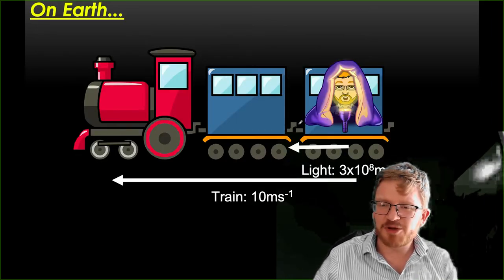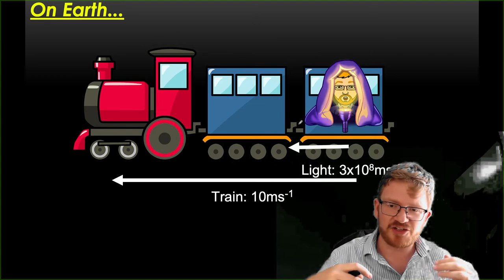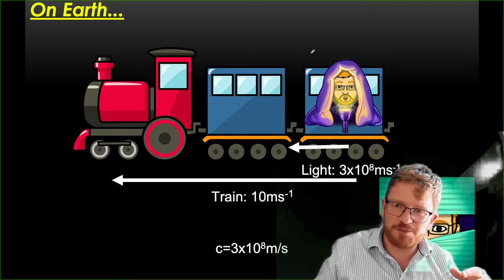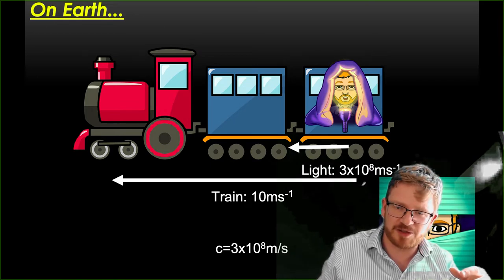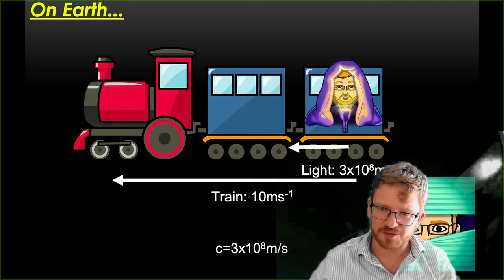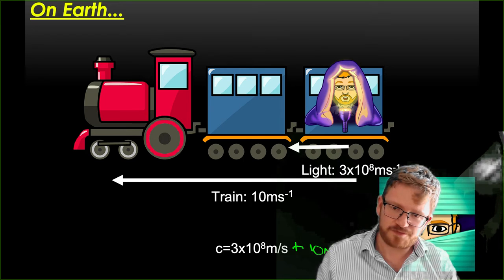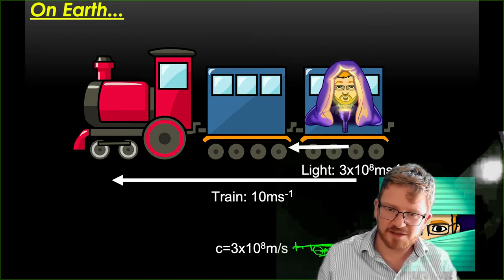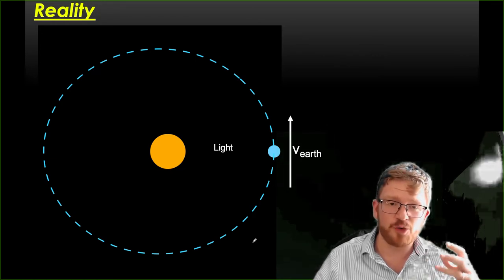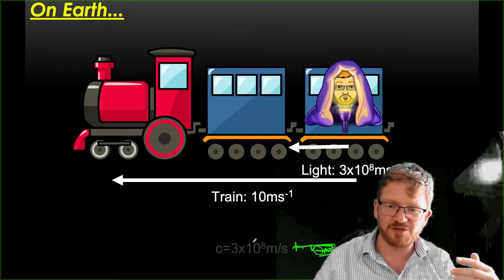That's weird, because it gives us some very strange results. Going back to my train: instead of throwing a bowling ball, imagine I shine a light. You'd expect that someone standing at the side of the tracks would see the speed of light as 3 × 10⁸ plus 10 metres per second. But they don't — they see it as 3 × 10⁸ metres per second again. That's what the Michelson-Morley experiment showed: it doesn't matter what direction the train is going or how fast, the speed of light is the same.